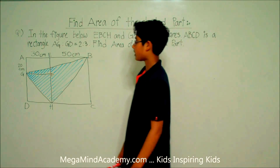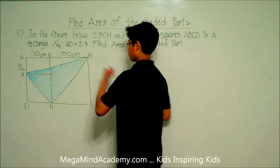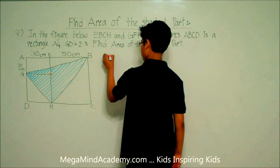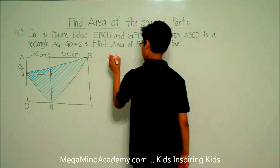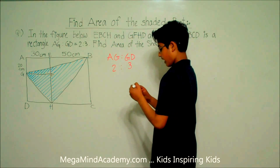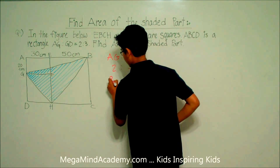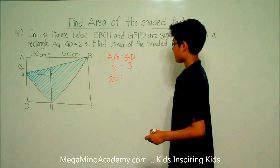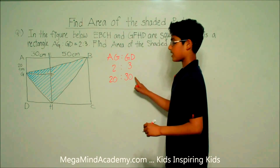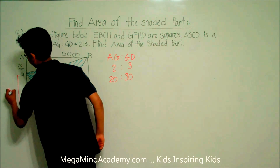It says in the problem that the ratio of AG to GD is 2 to 3. This is line AG and this is line GD, so AG to GD is 2 to 3. The diagram shows that line AG is 20 centimeters long. So this means that line GD is 30 centimeters long, because 2 times 10 is 20, so 3 times 10 is equal to 30.